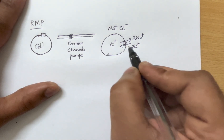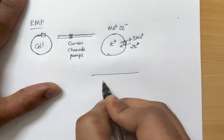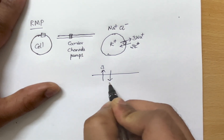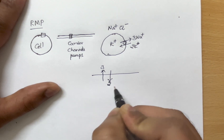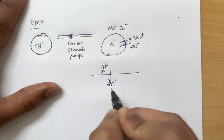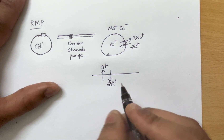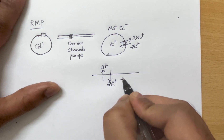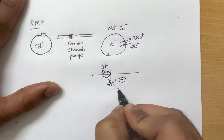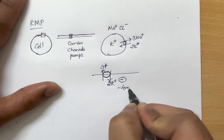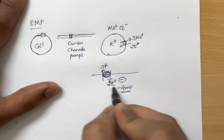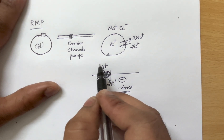The sodium-potassium ATPase pump actively pumps three sodium ions out and two potassium ions into the cell. Because of this action, more positive charges are pumped out compared to the number pumped inside — three positive charges out for two pumped in — so that creates a negativity within the cell of around minus four millivolts.